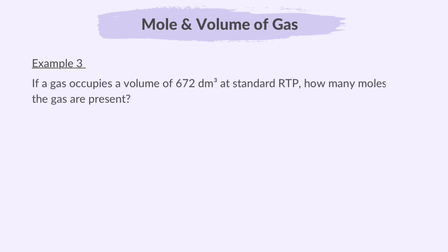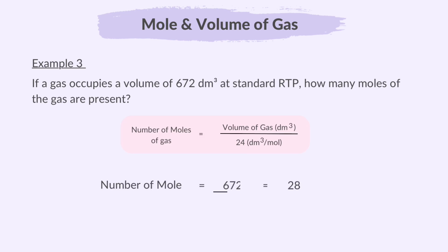Let's take an example. If a gas occupies a volume of 672 dm³ at standard RTP, how many moles of the gas are present? We apply the formula, dividing 672 by 24, which gives us 28 moles.